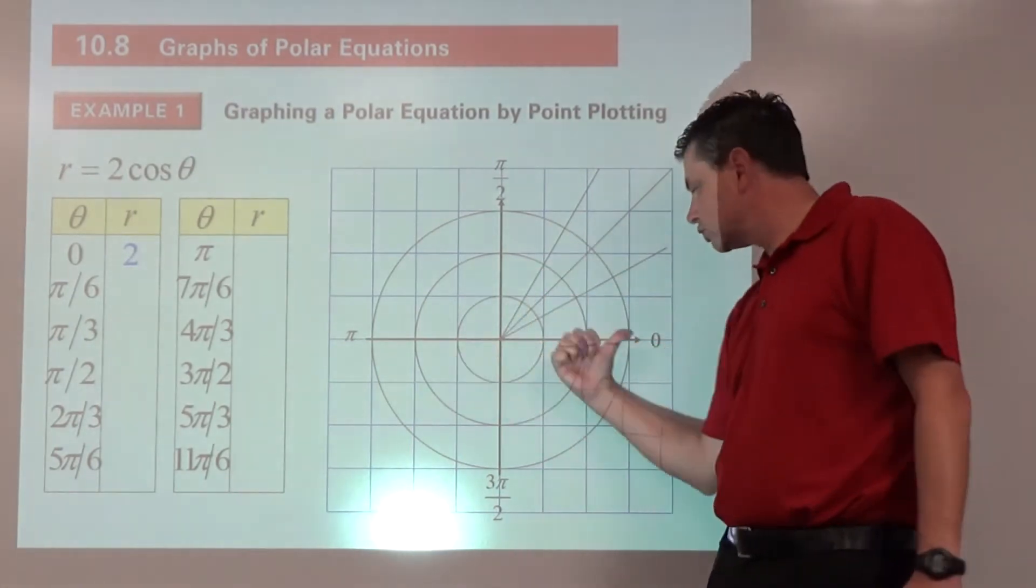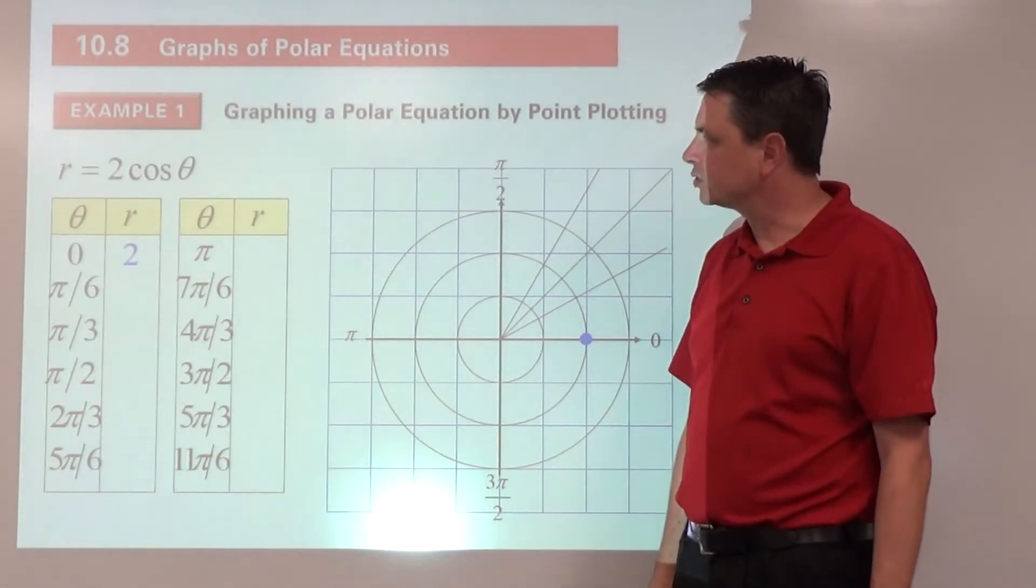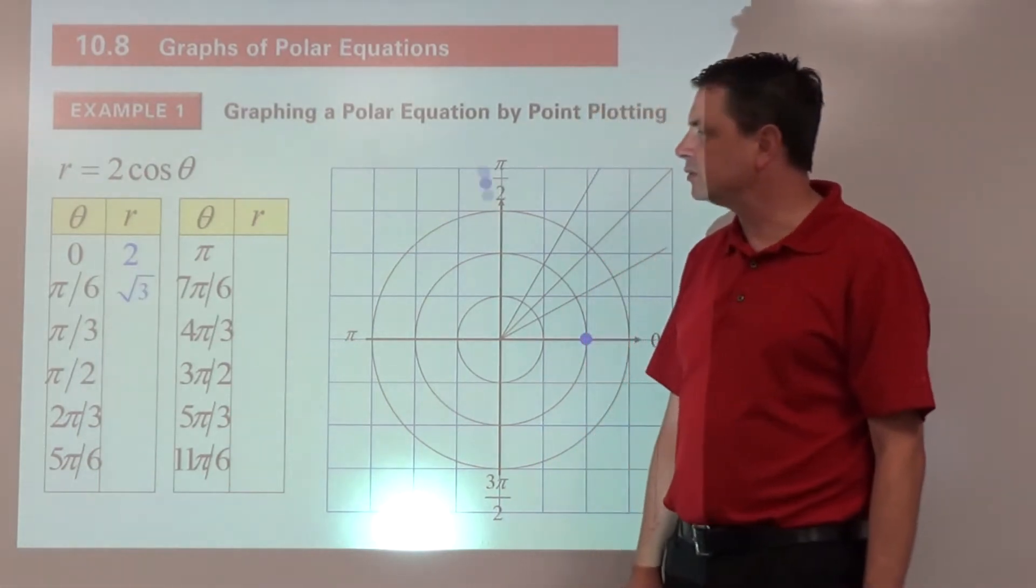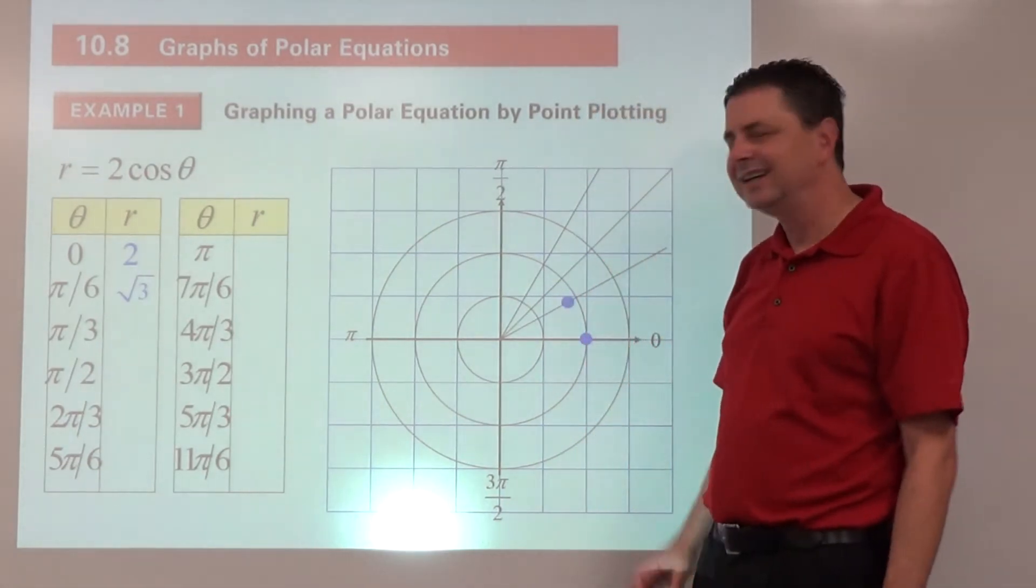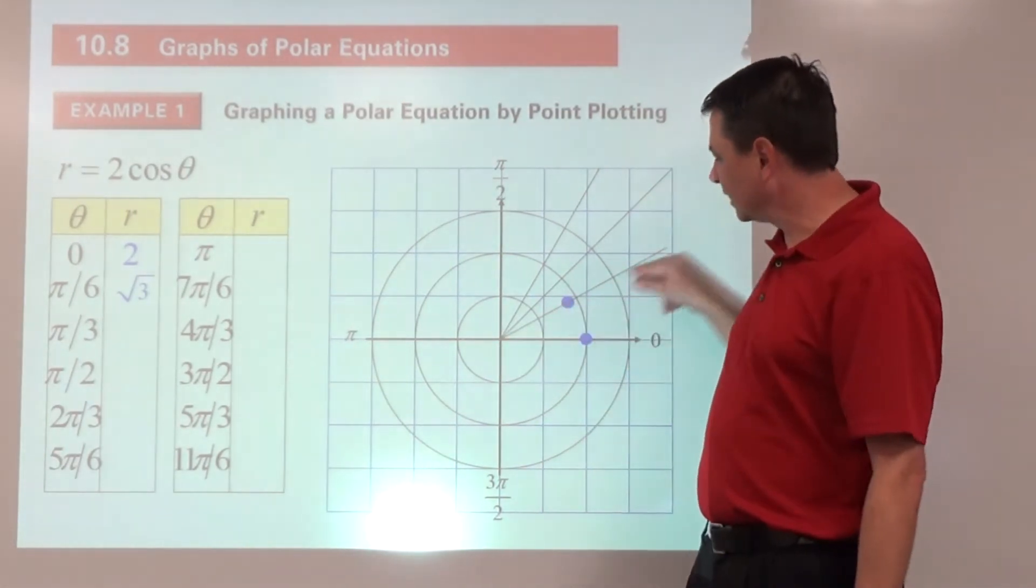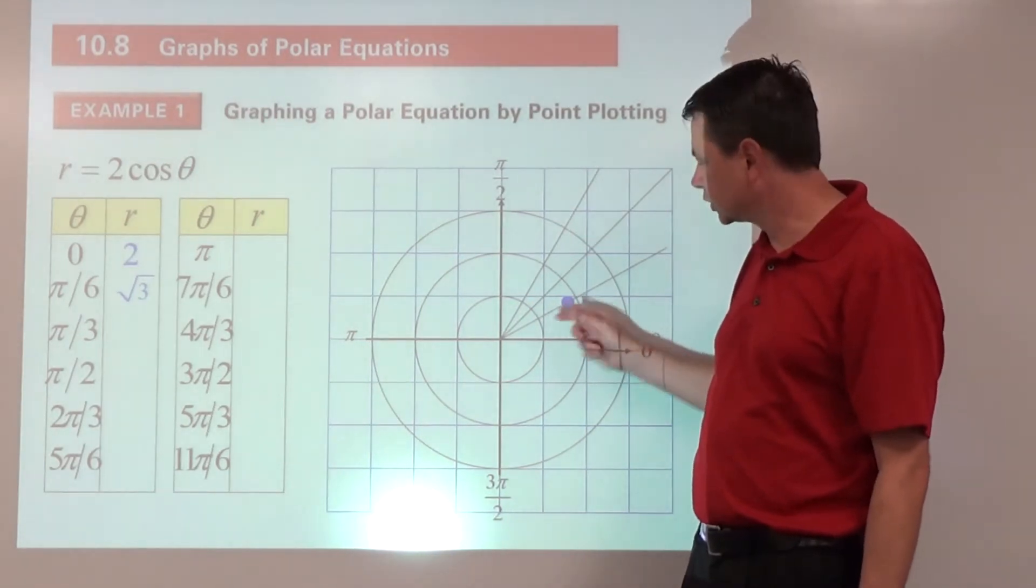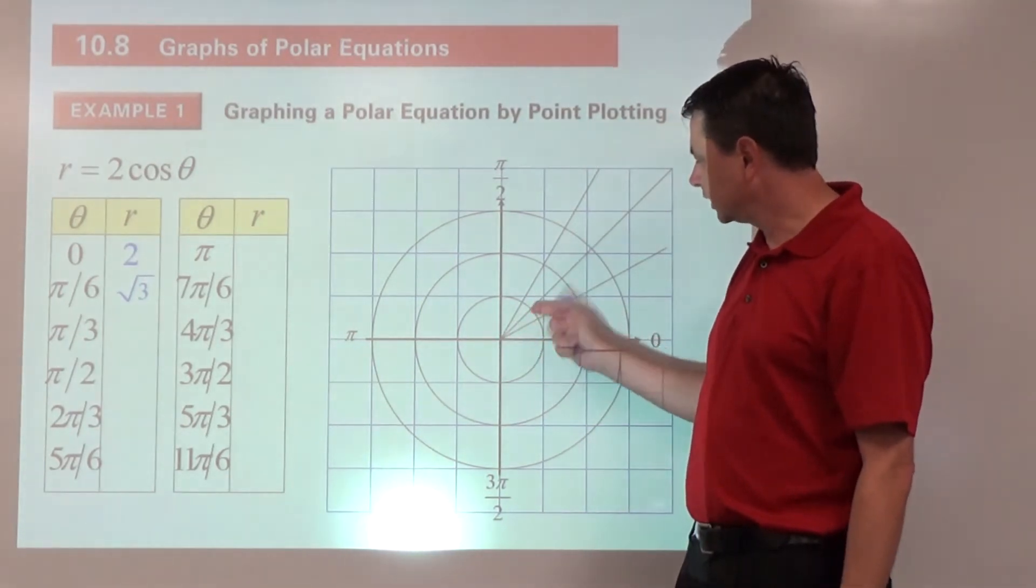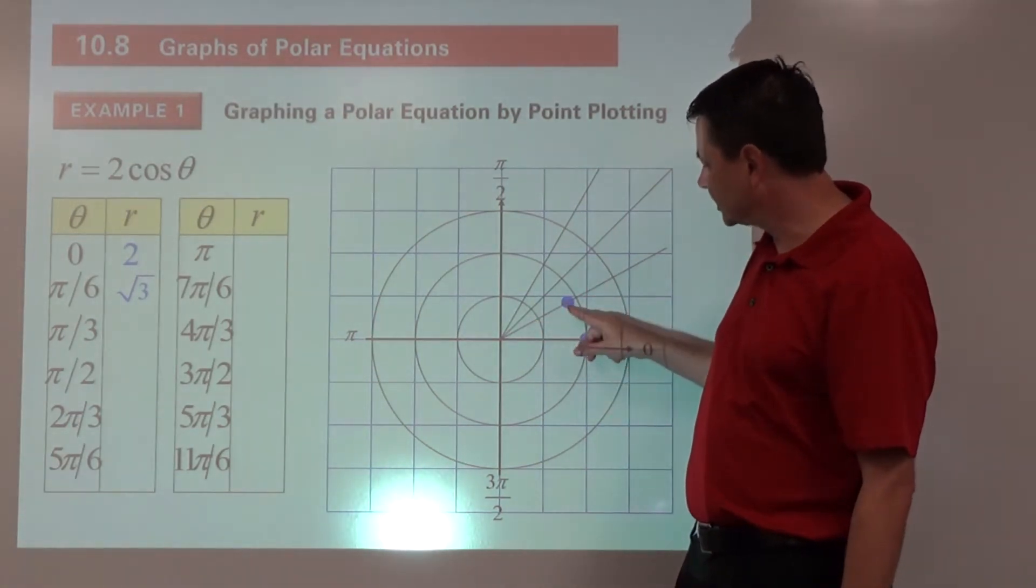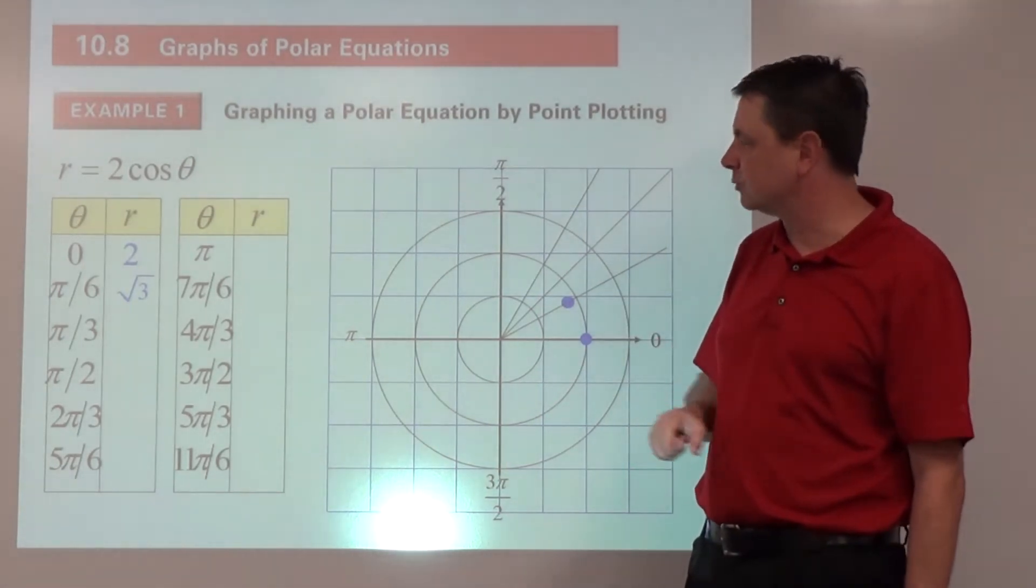We can plot that on a polar graph. For theta is 0, r is positive 2, 2 in that direction. Pi over 6, cosine of pi over 6 is root 3 over 2 times 2 is root 3. Decimal-wise that's about 1.7, so here is pi over 6 and there's about 1.7 right there.